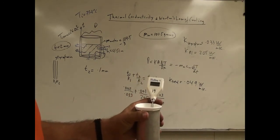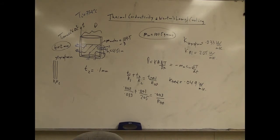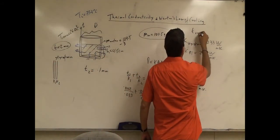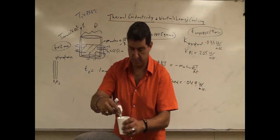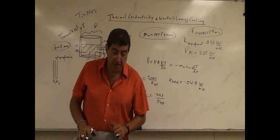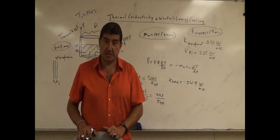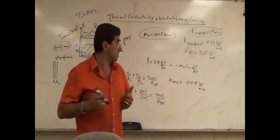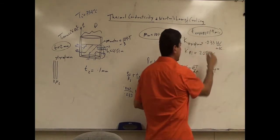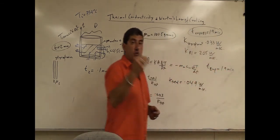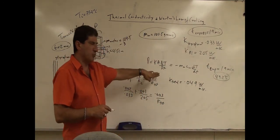The styrofoam cup took 19 minutes to reach 50°C. The cup inside the aluminum also took 19 minutes. Interestingly, the aluminum cup is actually slightly cooler — it reached 49.2 Celsius. So in 19 minutes, the cup inside the aluminum reached all the way down to 49.2°C. Let's do the full calculations and see what we get for the predicted time for the styrofoam plus aluminum.